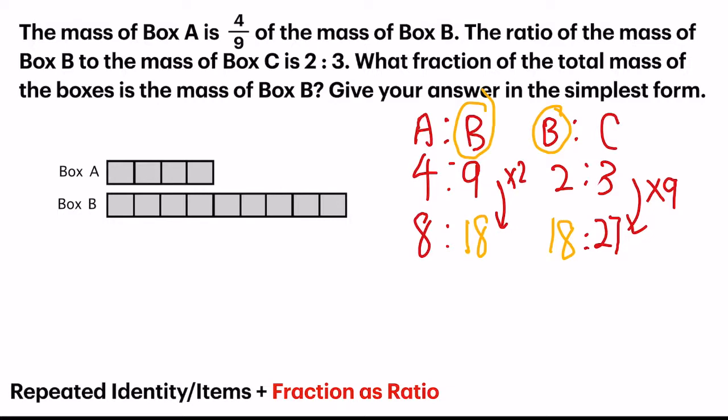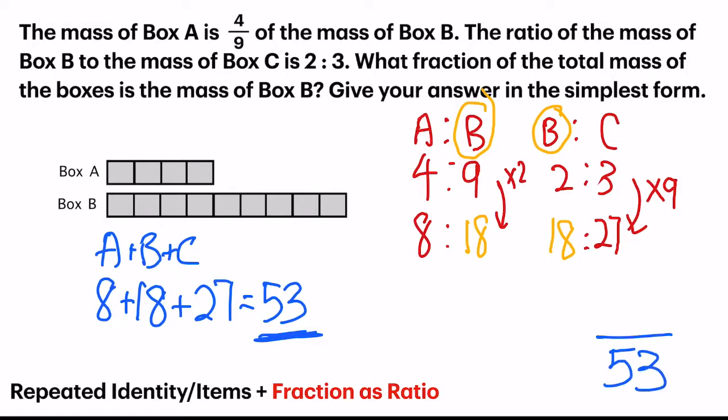Now at this point of time, let us go back to the question. They want us to express the answer as a fraction of the total mass of the boxes. What's the total mass of A plus B plus C? So we have 8 plus 18 plus 27, which gives us 53. And that is my denominator. So I have my answer out of 53. And what do they want? Box B. So my numerator will be 18. Let's do a final check to see if we can simplify our answer. This is 18 and 53. I always try to divide by 2 or 3. And in this case, it cannot be, because the bottom denominator is an odd number. So that's my final answer.